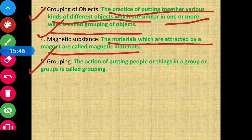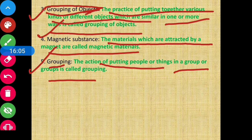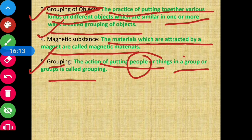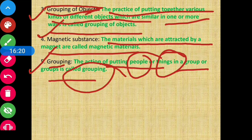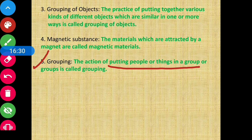Fifth, grouping: the action of putting people or things in a group or groups is called grouping. This is slightly broader than grouping of objects, as it includes people and things in general — not just objects.